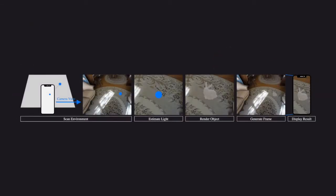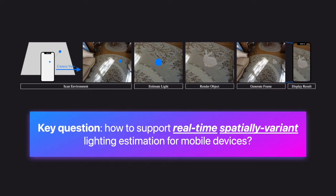Have you ever wondered, wouldn't it be nice to let AR applications have lifelike virtual objects rendering? In this paper, we aim to answer the key research question: how to support real-time spatially varying lighting estimation for mobile devices.